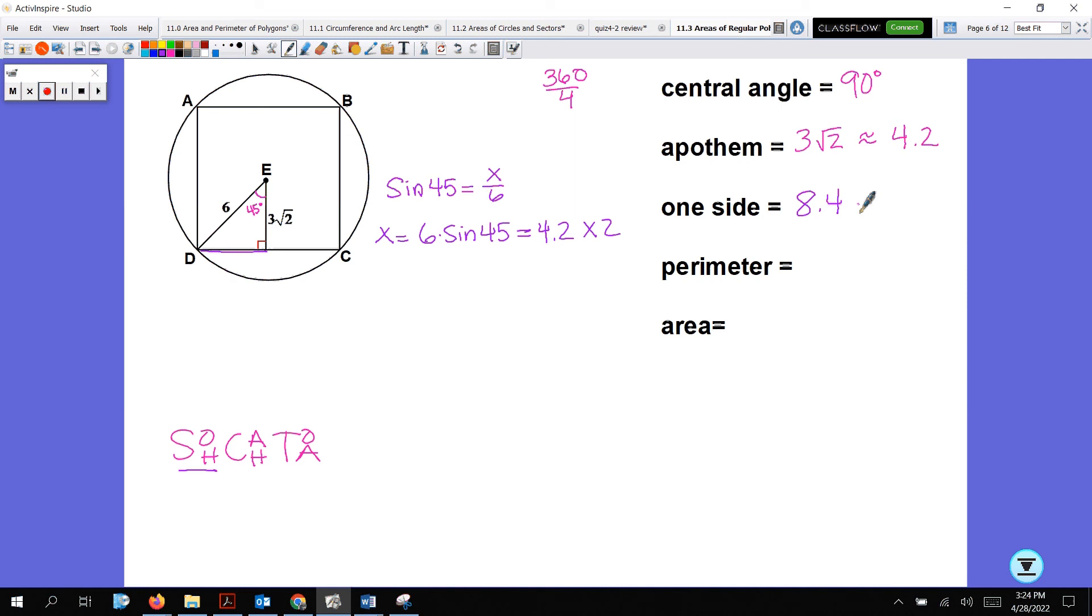The perimeter of the square is literally taking that 8.4 times 4, which gives us 33.6. If you did 3 root 2 times 2, which is 6 root 2, this is more exact. And if I plug 4 times 6 root 2, that would give me 33.9. So either way, if we use 8.4, we get 33.6. If we use 6 root 2, we get 33.9.